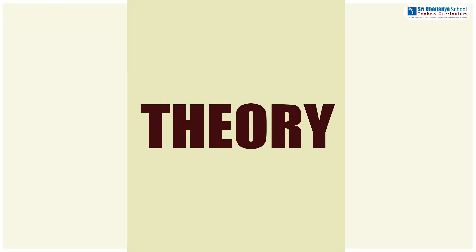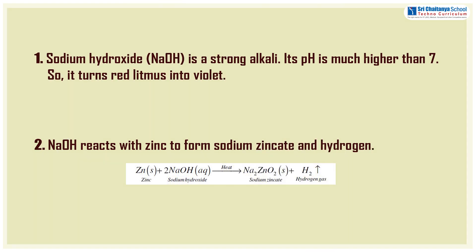Theory of this experiment: sodium hydroxide is a strong alkali. Its pH is much higher than 7, so it turns red litmus into violet.